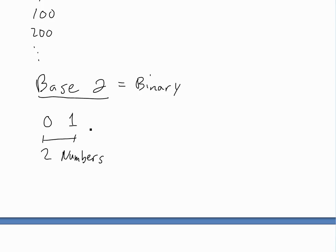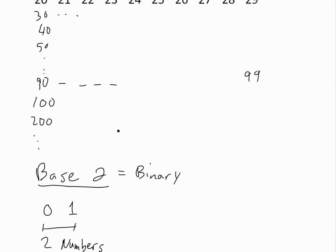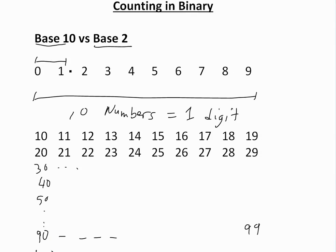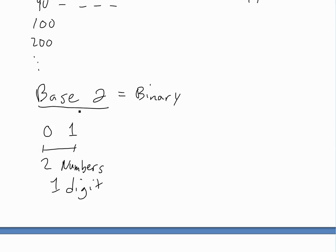So base 2, which is binary, we get two numbers and then we increase the digits. This is one digit each, and then we increase the exact same way. But since there's only 0 and 1, we go from 0 to 1, then we go directly to 10. Then the next one is 11. Again two digits, and then since there is no 2, 3, 4, 5, etc., we go directly to the third digit.